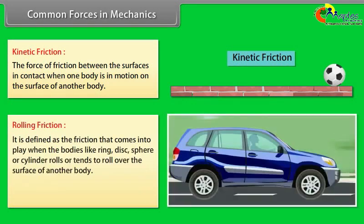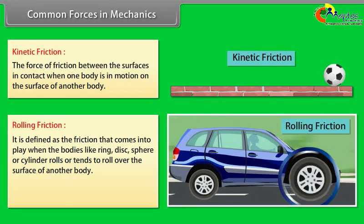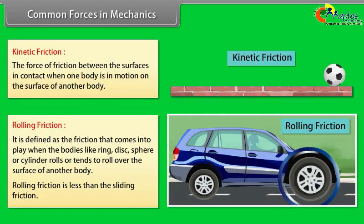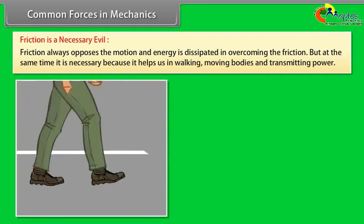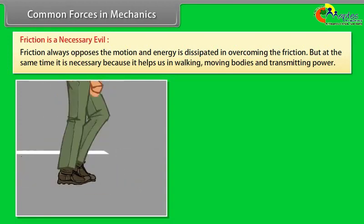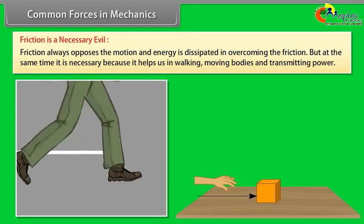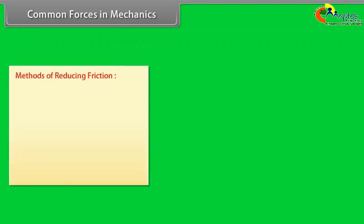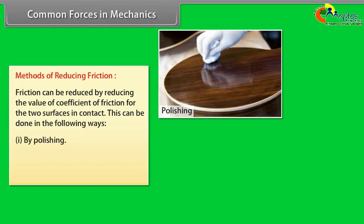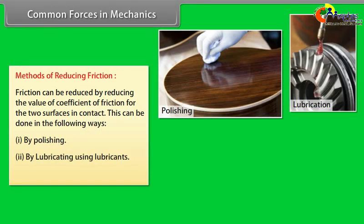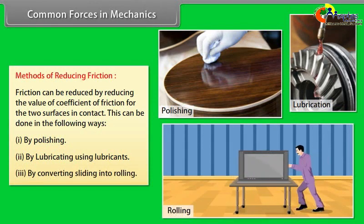Rolling friction comes into play when bodies like a ring, disc, sphere, or cylinder roll over a surface — it is less than sliding friction. Friction is a necessary evil: it always opposes motion and dissipates energy, yet it helps us walk, move bodies, and transmit power. Friction can be reduced by polishing surfaces, by lubricating using lubricants, or by converting sliding into rolling.